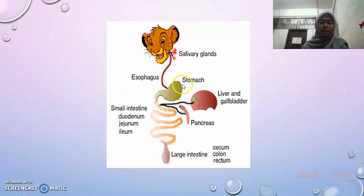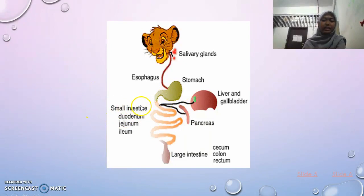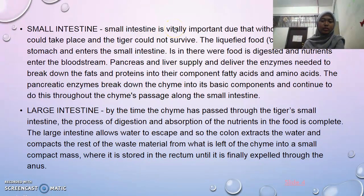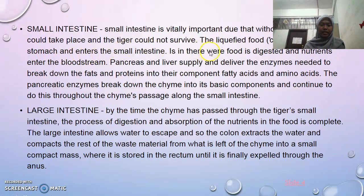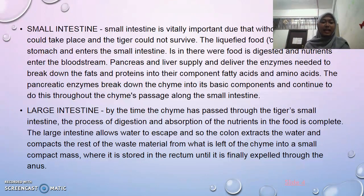Next, after the stomach, the liquefied food moves into the small intestine, which consists of the duodenum, jejunum, and ileum. In the small intestine, food is digested and nutrients enter the bloodstream. The pancreas and liver supply the enzymes needed to break down fats and proteins into their components — fatty acids and amino acids. The pancreatic enzymes continue to break down food throughout its passage along the small intestine.